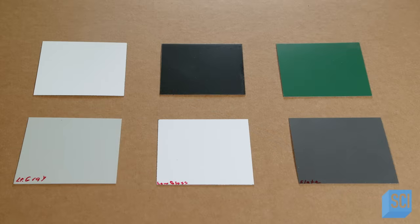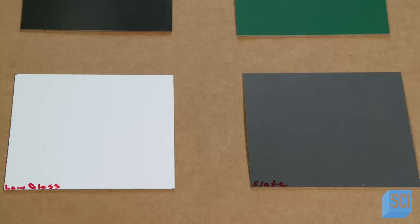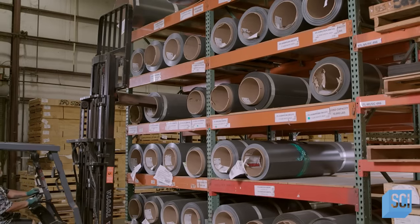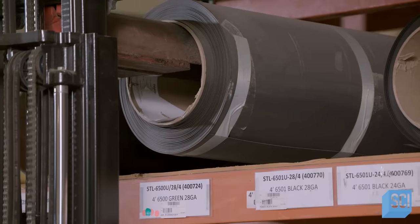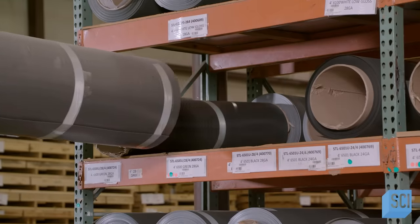Green and black dry erase boards can also be used as chalk boards, while grey and low gloss white double as projection boards. The surface material is a porcelain coated steel sheet, flexible enough to be rolled up but also pressure sensitive.